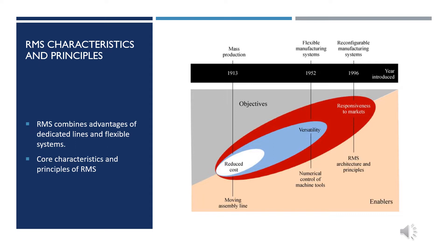RMS Characteristics and Principles. RMS combines advantages of dedicated lines and flexible systems. In the last decades of the 20th century, the manufacturing industry utilized two types of common manufacturing systems: dedicated manufacturing systems (DMS) and flexible manufacturing systems (FMS). DMS are designed to enable mass production of a specific product at very low cost with very high output. FMS are designed to enable production of any product but, compared with DMS, their output is very low.